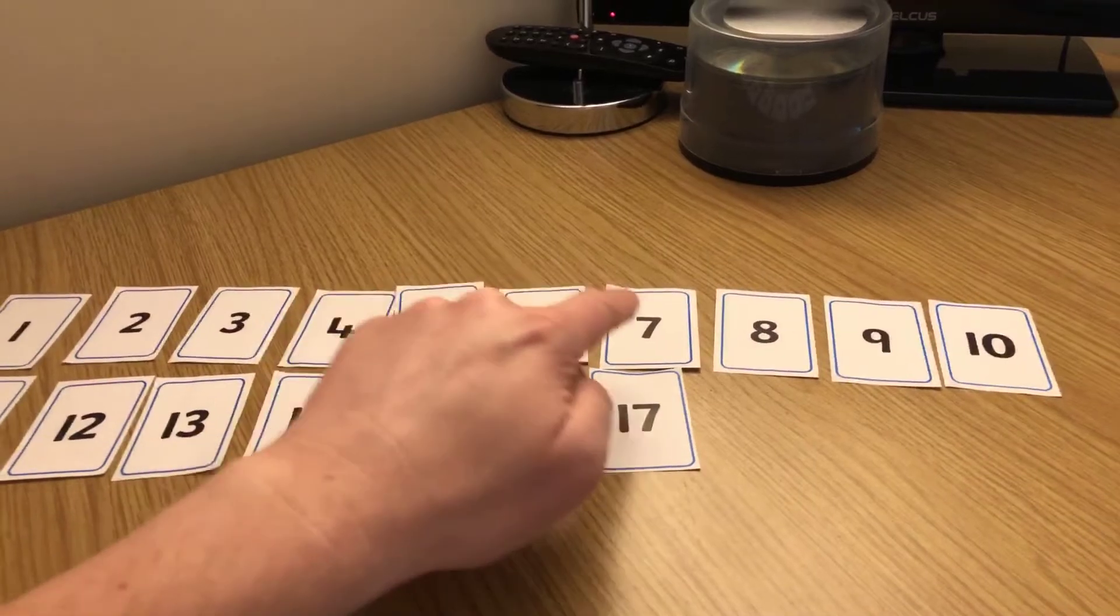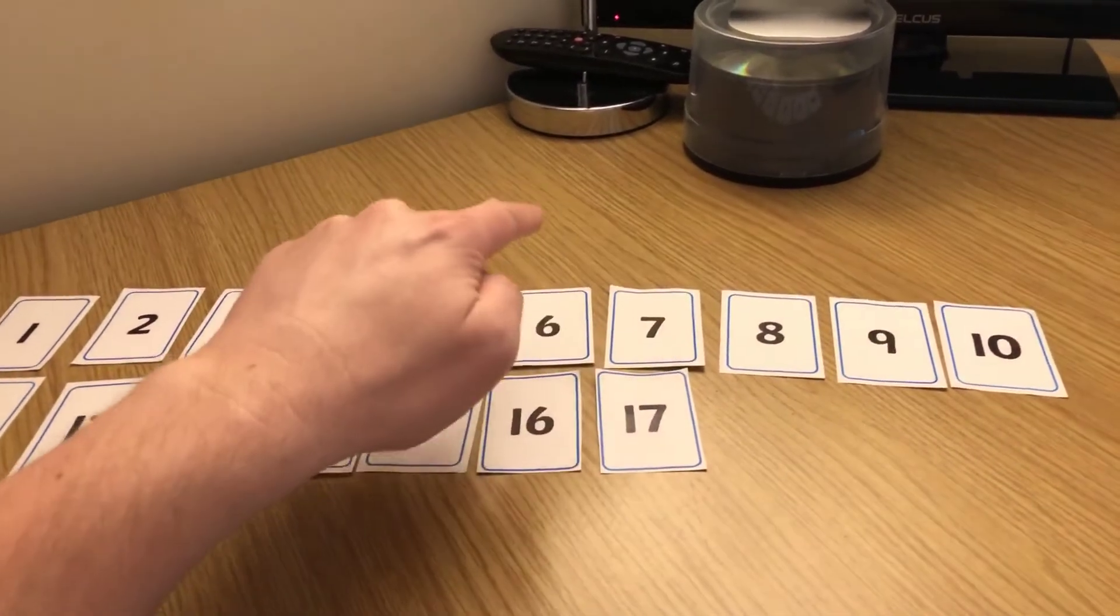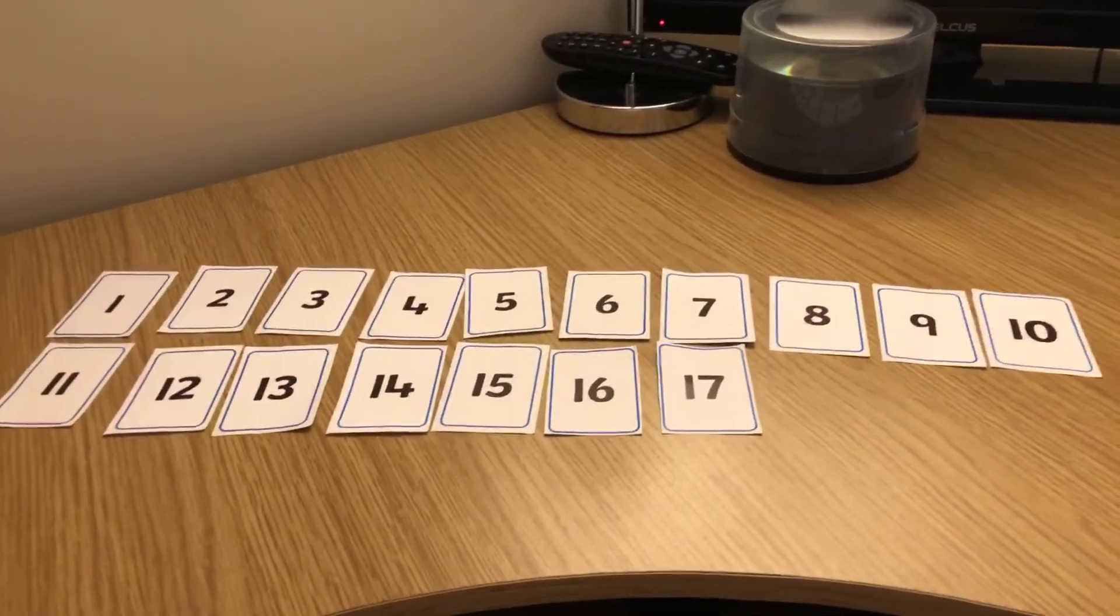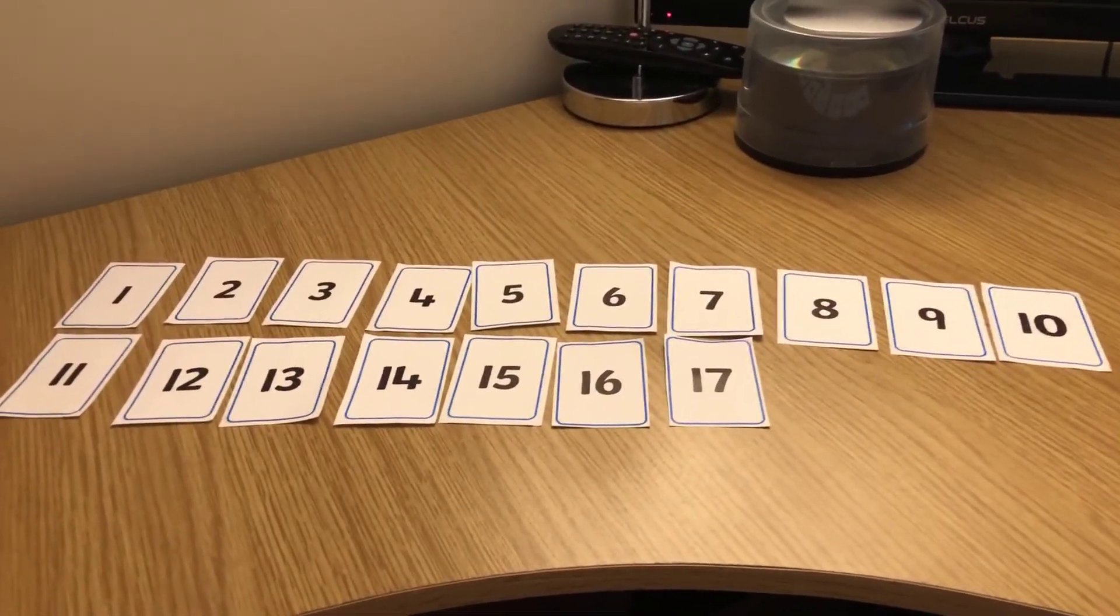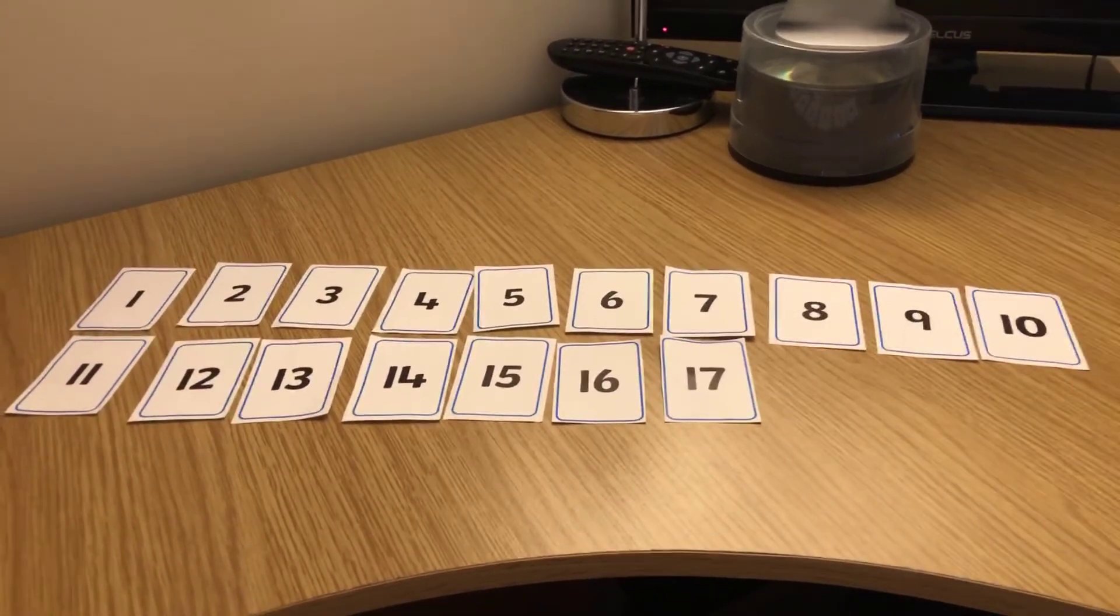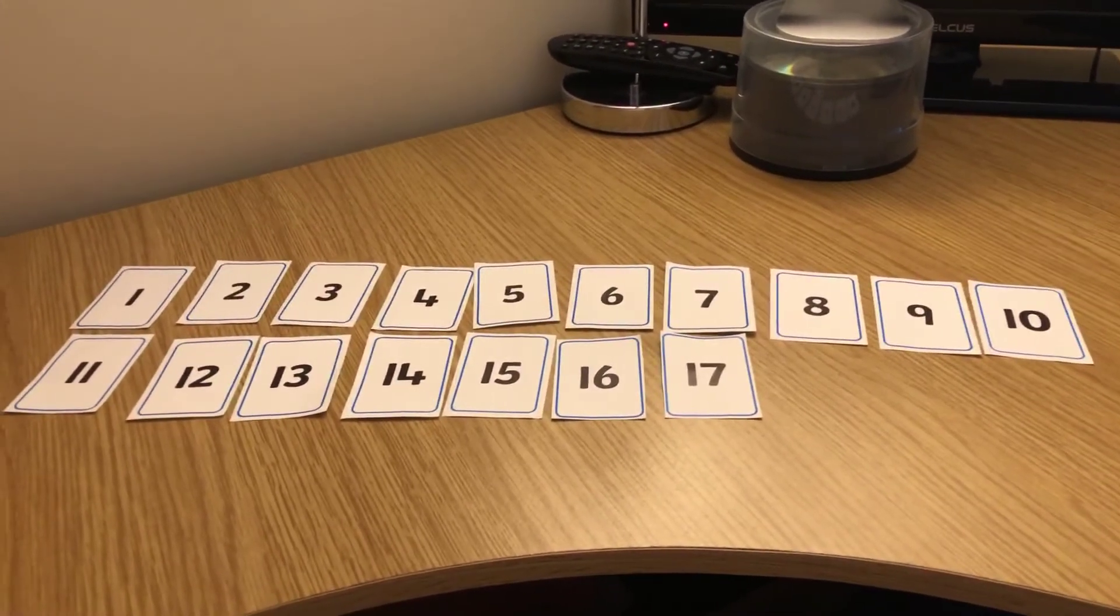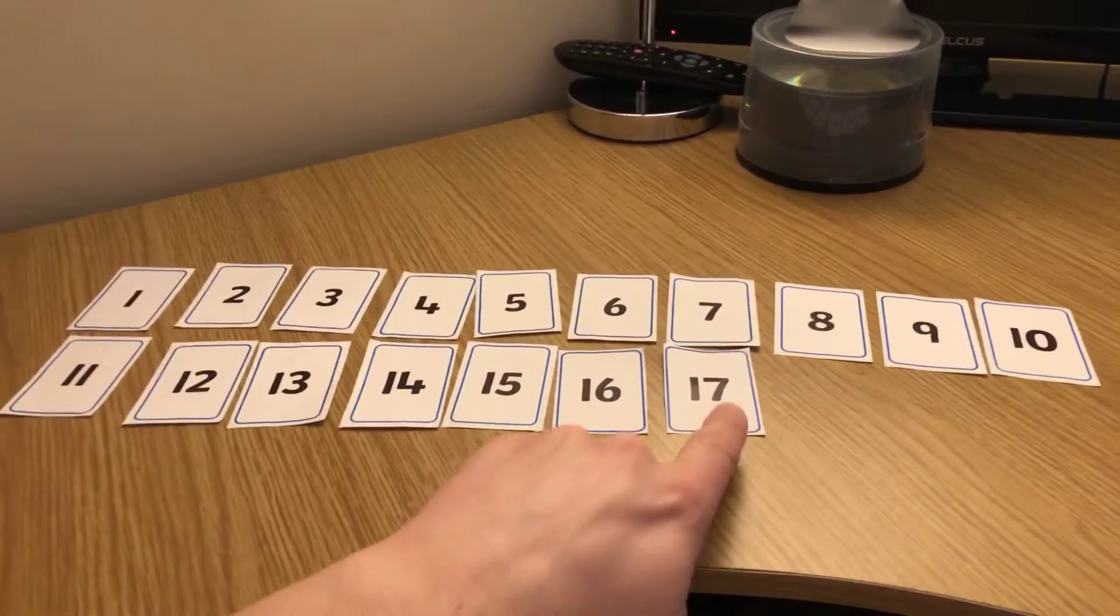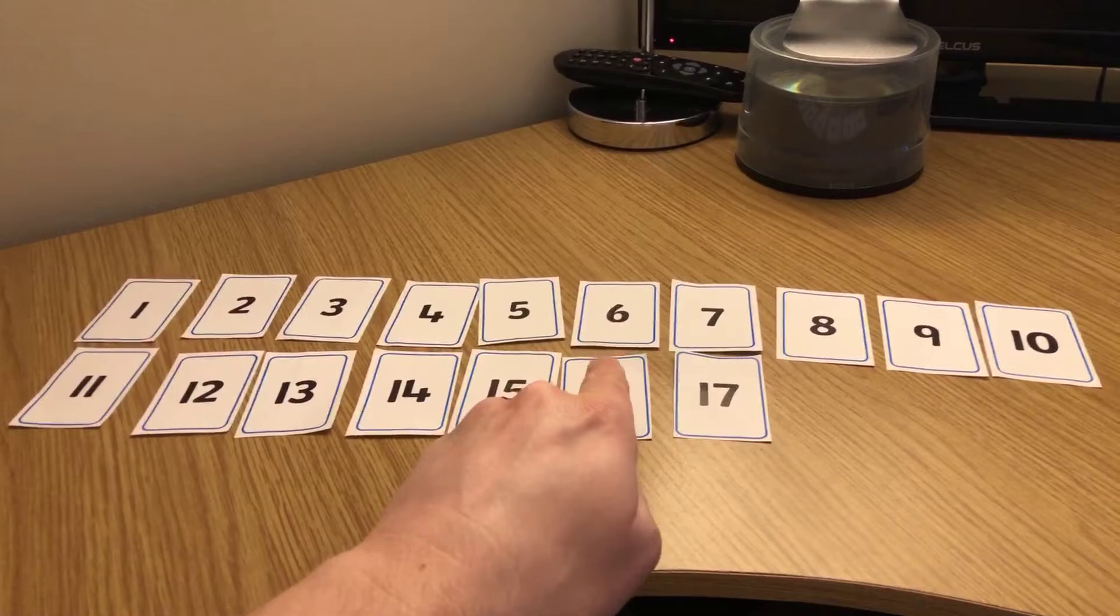So one less is one number backwards or the number before. Okay, so now you know that, what's one less than seventeen? What's one less than seventeen? Got it? So there's seventeen, go back one number. One number less is sixteen.